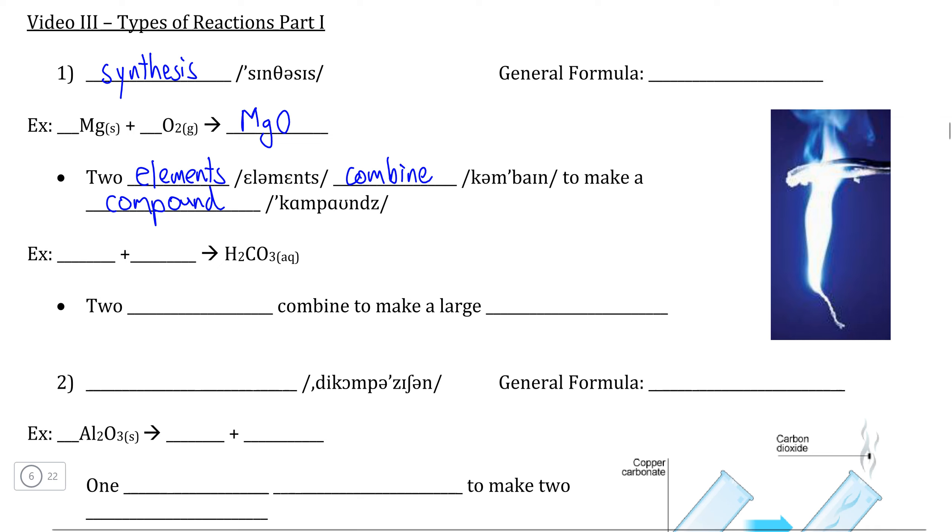So the two elements, magnesium and oxygen, we can represent simply as A and B, and because A and B combine together in order to form a compound, we can represent the compound as AB.